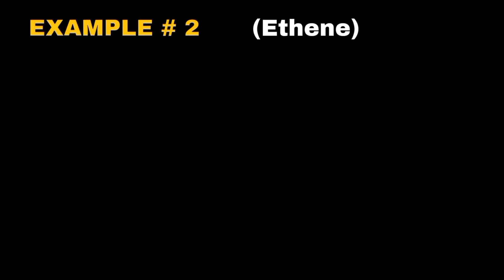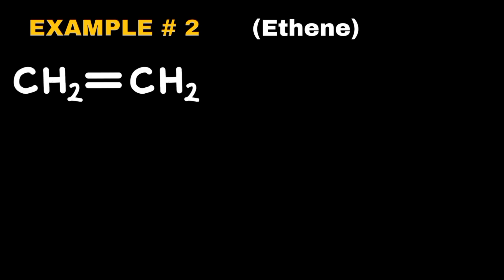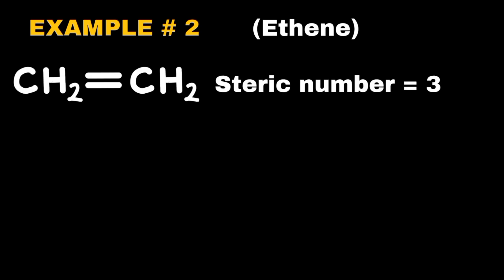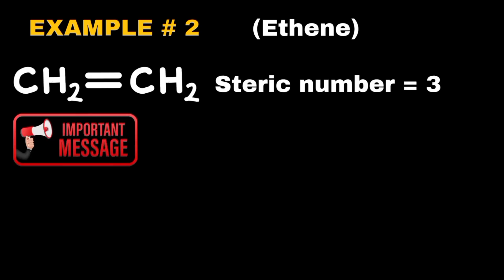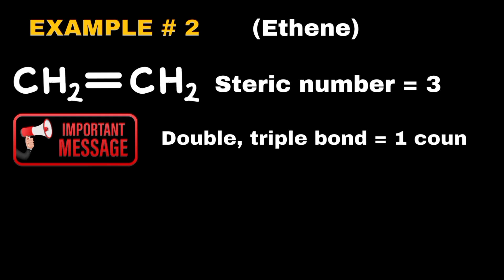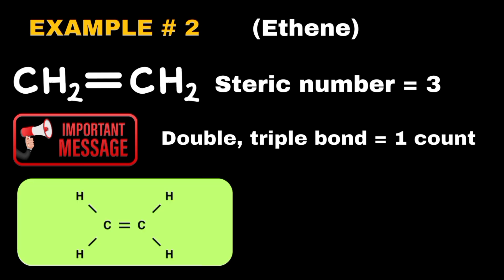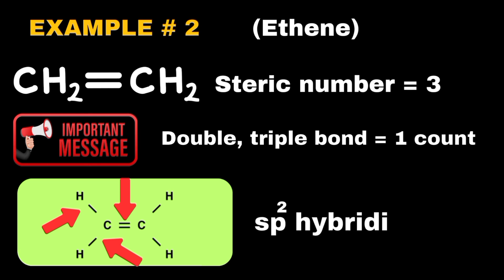In the case of ethene, applying the steric number formula gives a result of three. An important point is that double and triple bonds are counted as one steric number — if an atom forms a double or triple bond, it counts as one steric number. Ethene has one double bond and two single bonds with hydrogen, so its steric number is three, confirming sp2 hybridization of carbon in the ethene molecule.